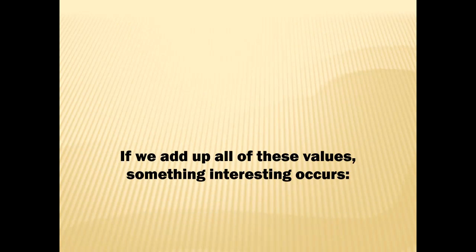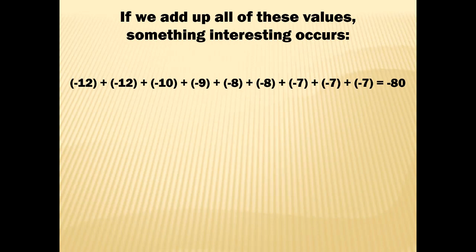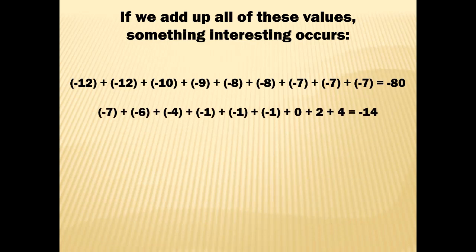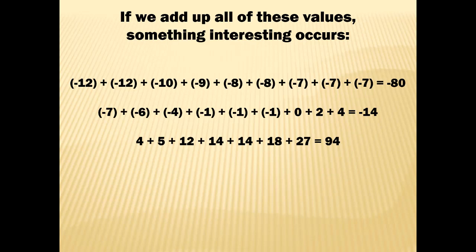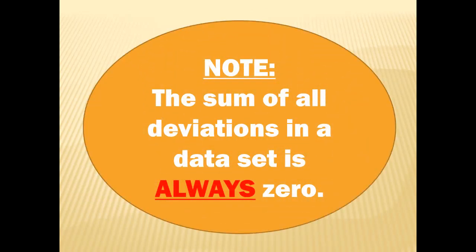If we add up all these deviation values, something interesting occurs. Adding the negative deviations gives negative 80, then negative 14, and the positive deviations sum to 94. Taking negative 80 plus negative 14 plus 94 gives zero. This leads to an important note: the sum of all deviations in a data set is always zero, no matter what data set you have.